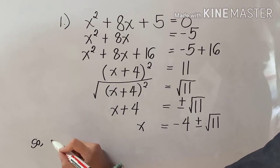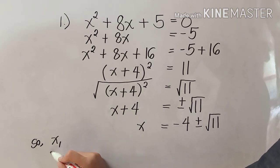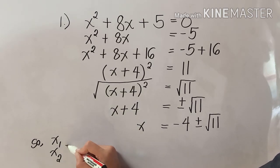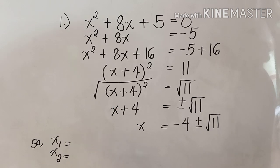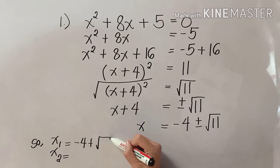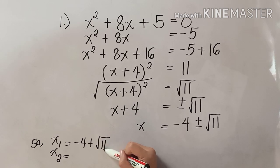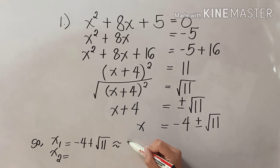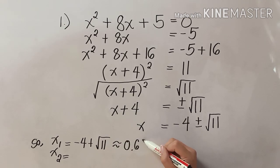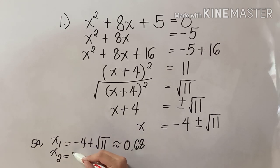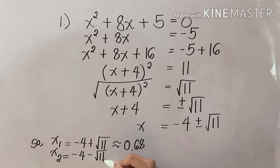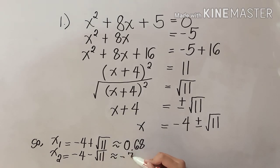So we will have two answers. x₁ equals negative 4 plus square root of 11, which is approximately 0.68. And x₂ equals negative 4 minus square root of 11, which is approximately negative 7.38.